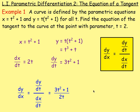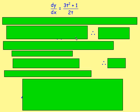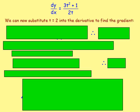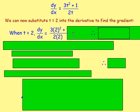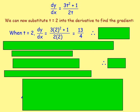We need the gradient as a number, so we substitute t equals 2. When t equals 2, we get 3 times 2 squared plus 1 over 2 times 2, which gives us 13 over 4. So the gradient of the tangent is 13 over 4.